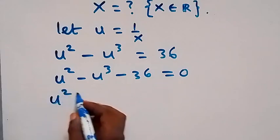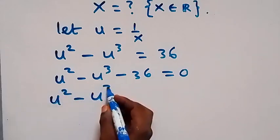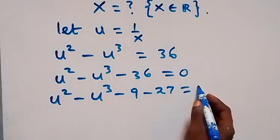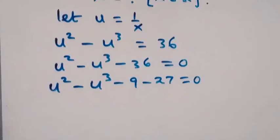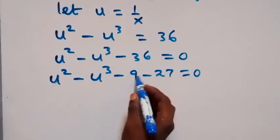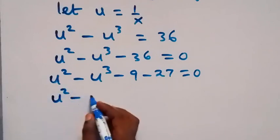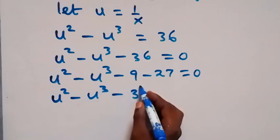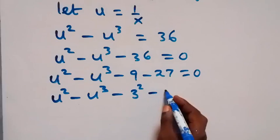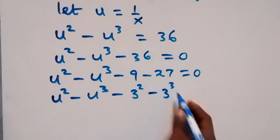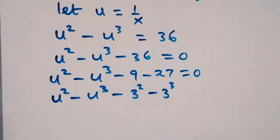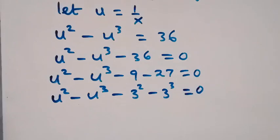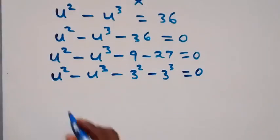We can separate minus 36 as minus 9 minus 27, so this becomes u squared minus u cubed minus 9 minus 27 equals zero. Note that 9 is 3 squared and 27 is 3 cubed.